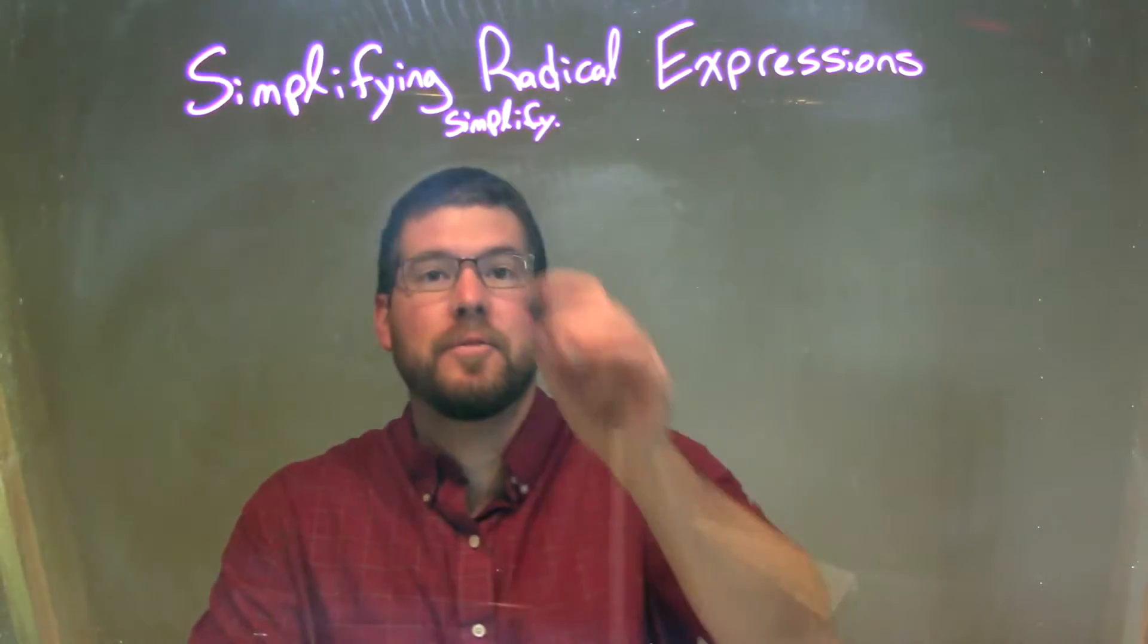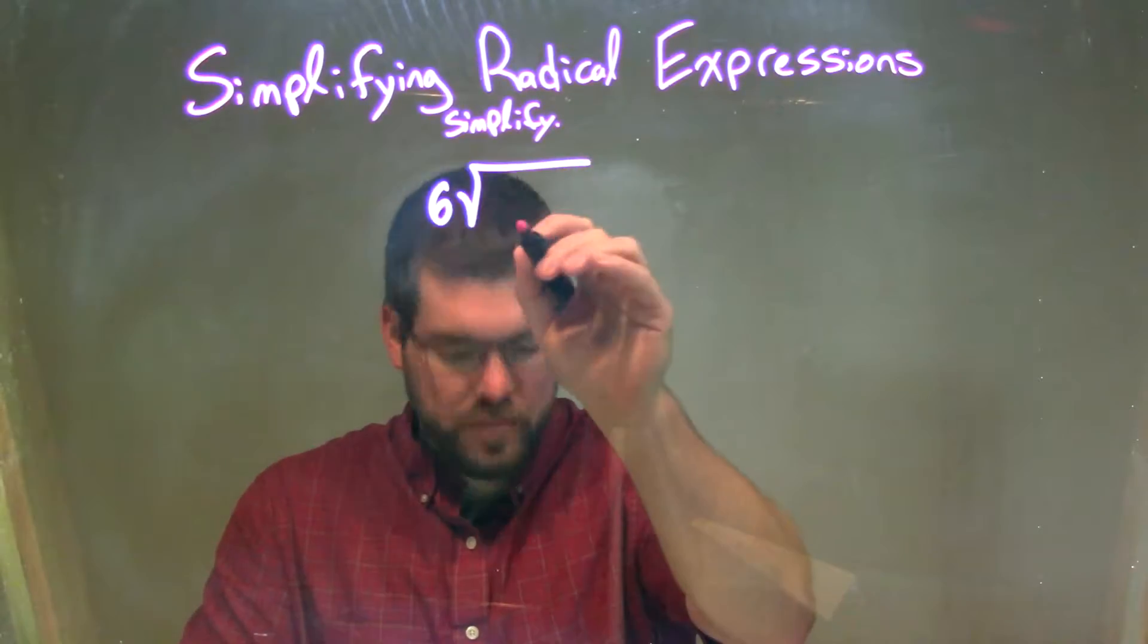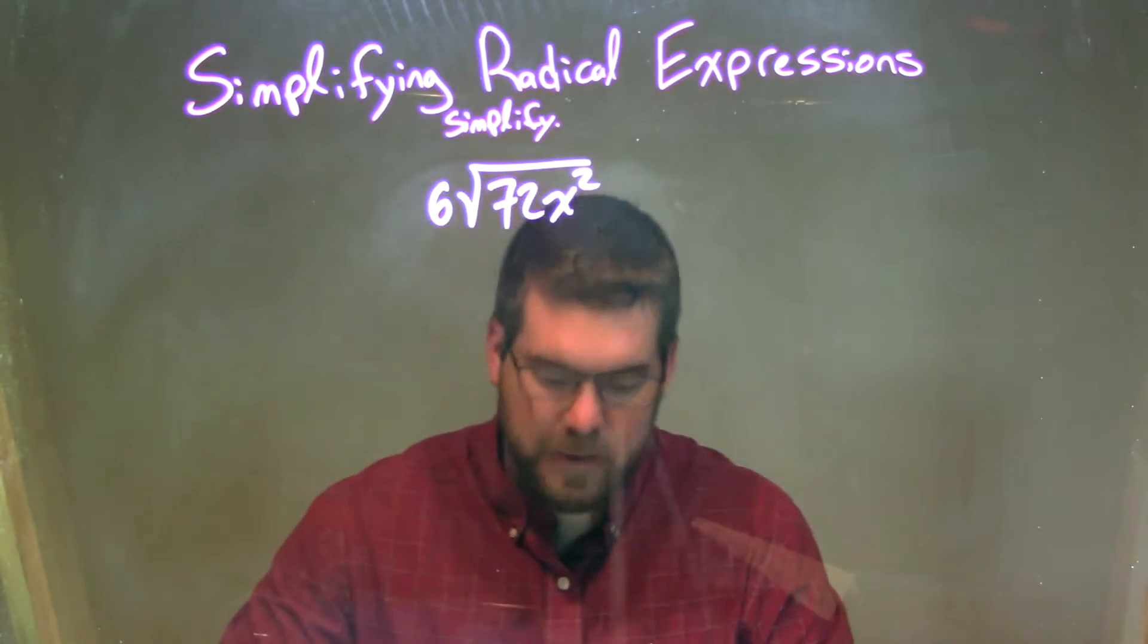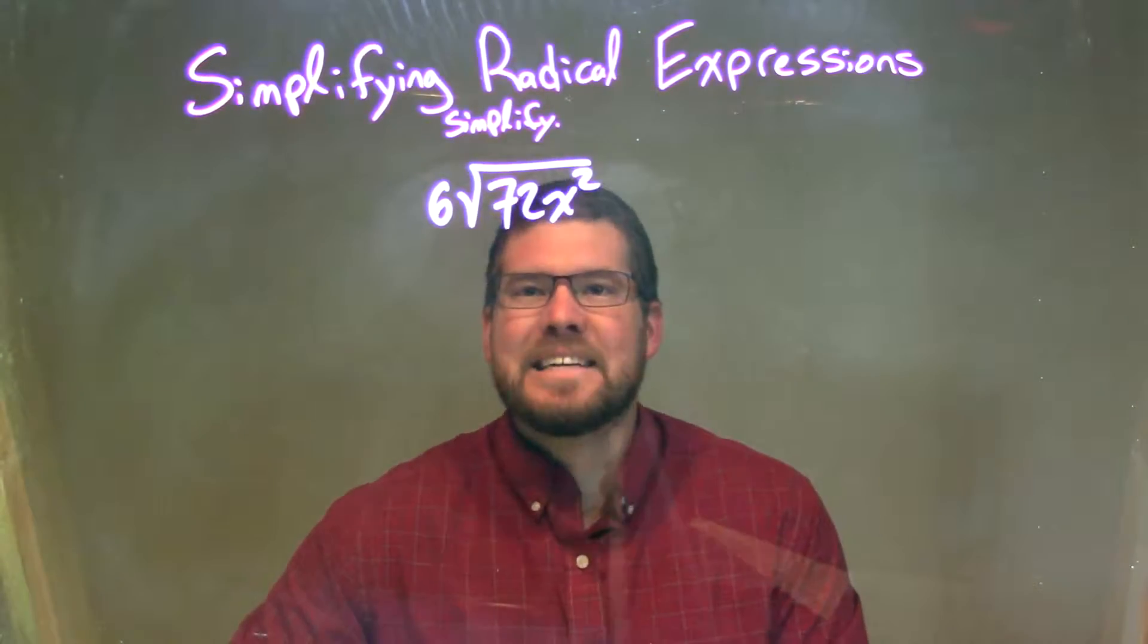So if I was given this expression, 6 times the square root of 72 x squared. Okay. Well, I want to see if we can break down 72.